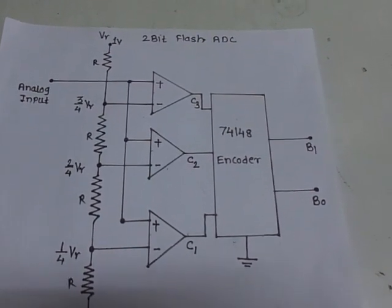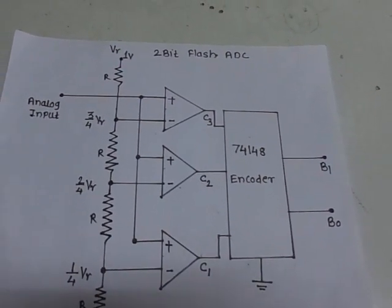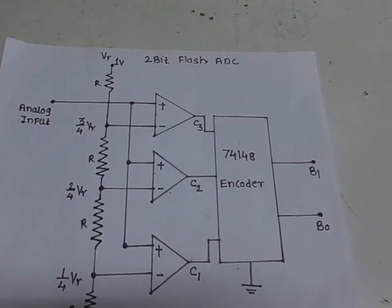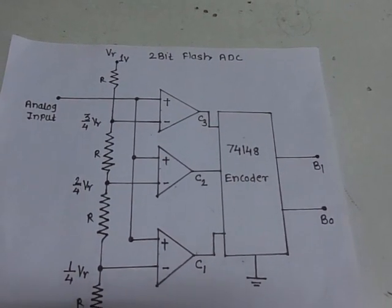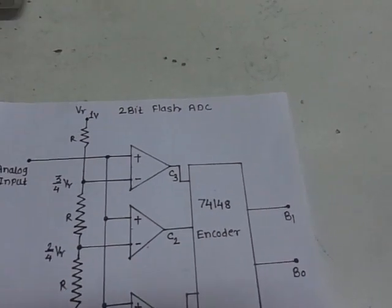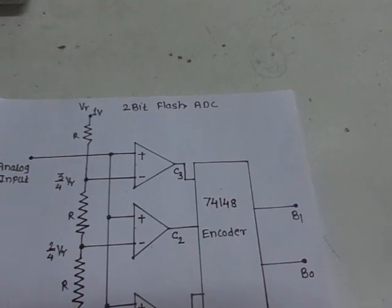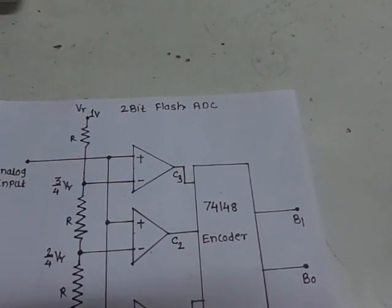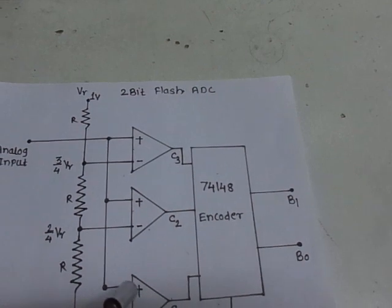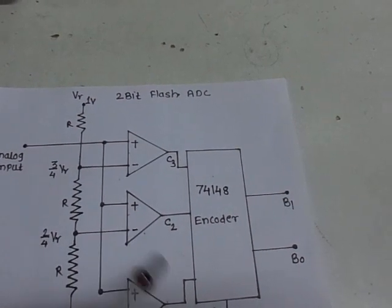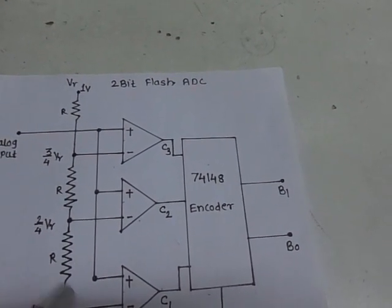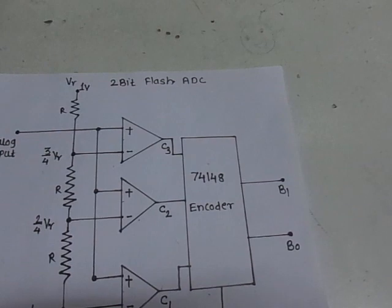Hello students, we are going to discuss about a 2-bit flash ADC, that is analog to digital converter. Normally we know that there are different types of analog to digital converters available. Out of these, we are going to use the flash type of ADC, or parallel comparator ADC circuit, for our discussion.